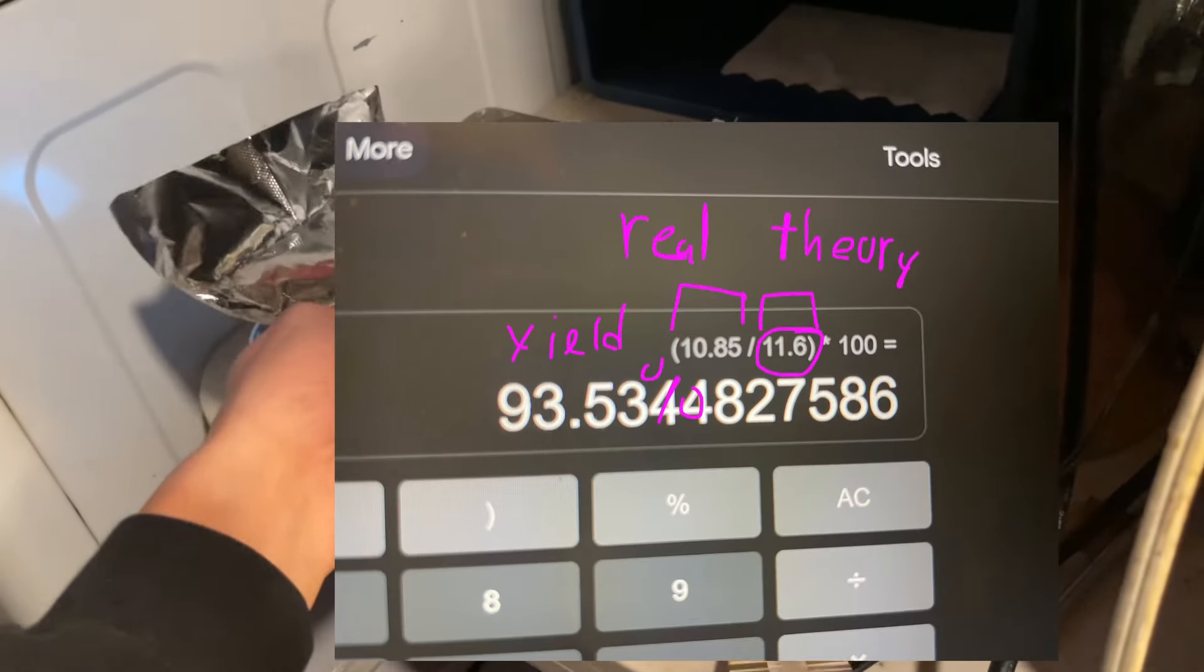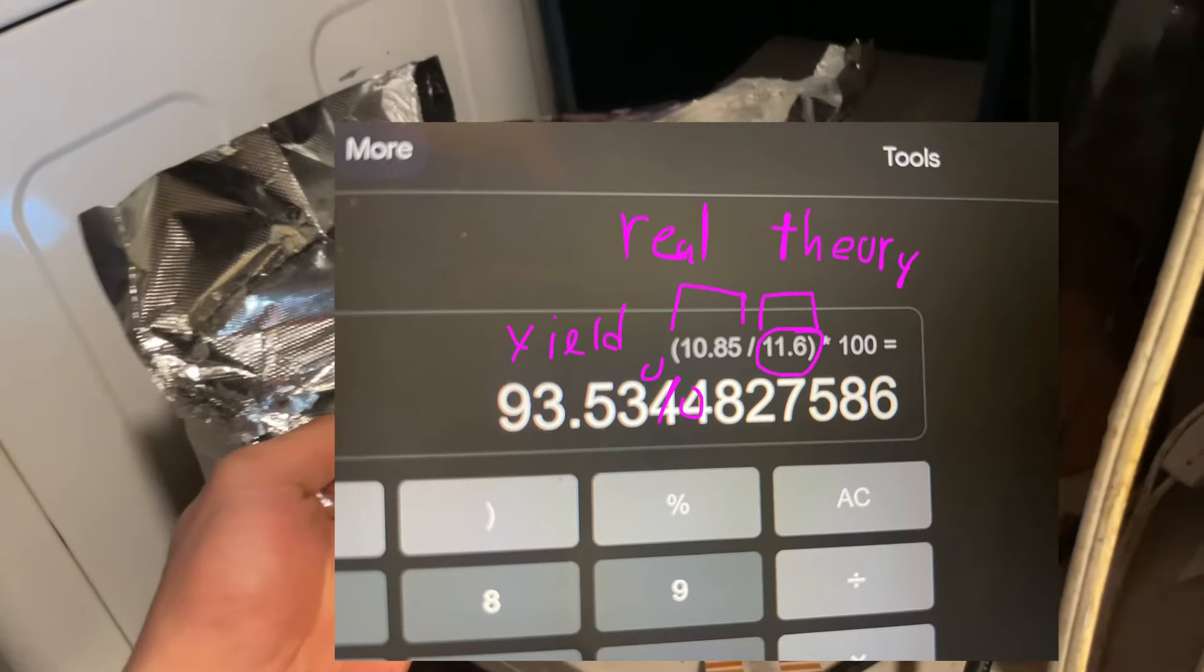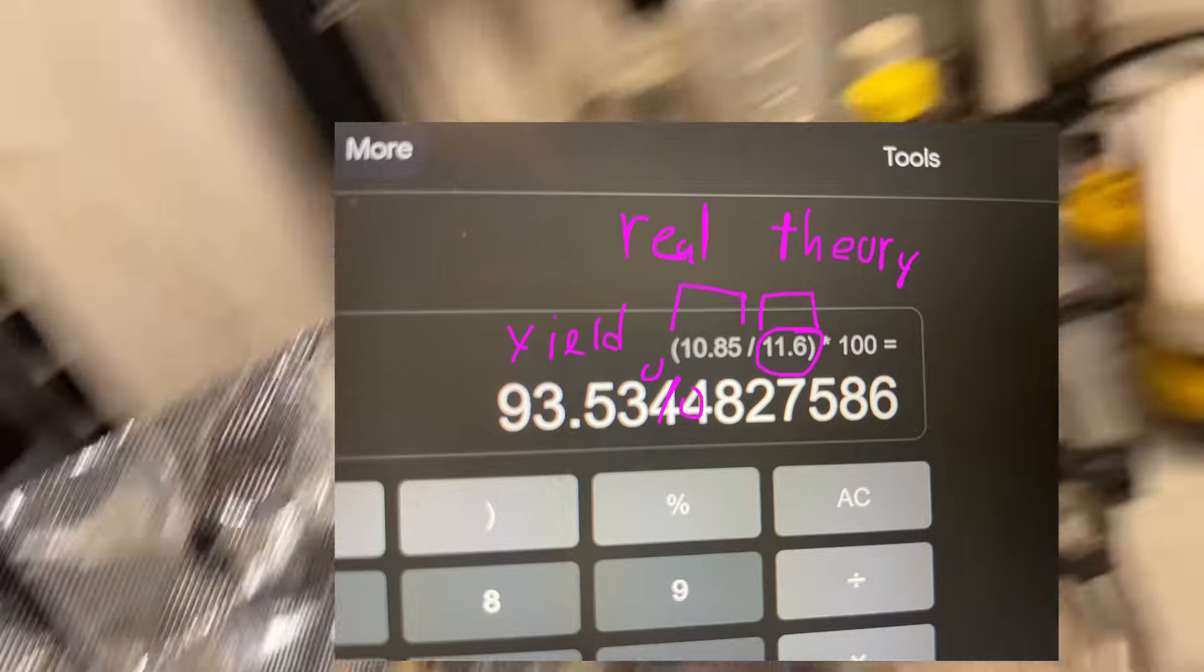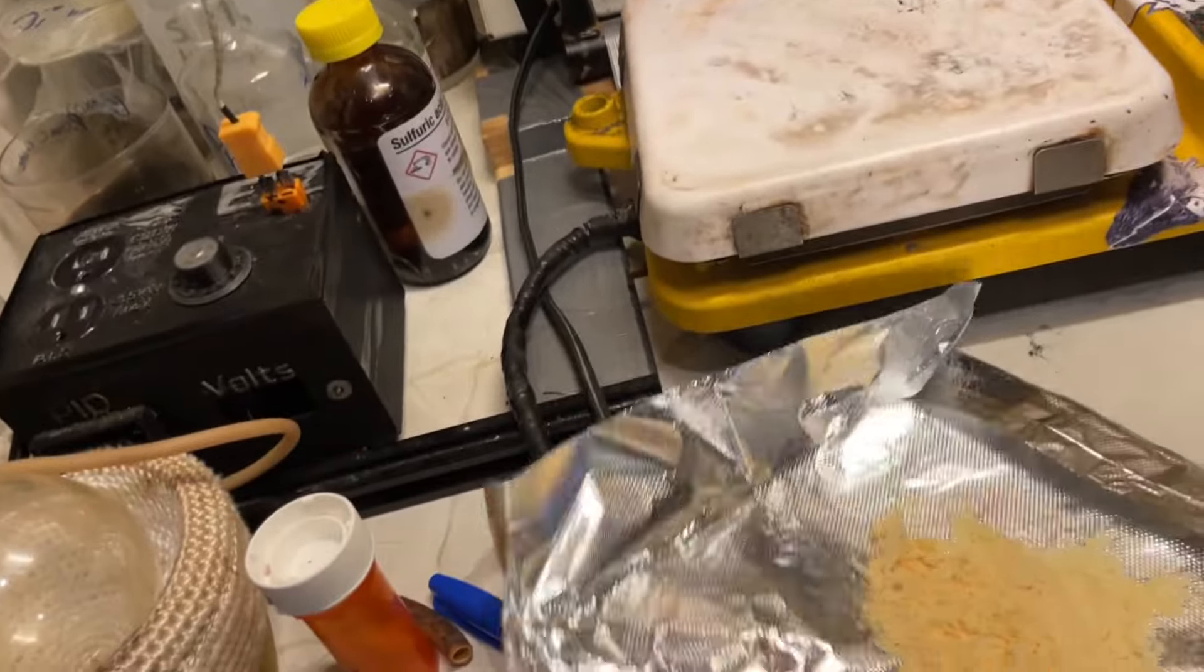Looks like cheese powder. On camera it looks more tan, but in real life it looks like the macaroni and cheese, like the instant ones. It looks like that cheese powder. We got 10.85 grams. I'll calculate the yield and I'll throw the yield up on the screen right now. That's how much yield we have. Depending on my reaction, amazing, wow, or miserable.